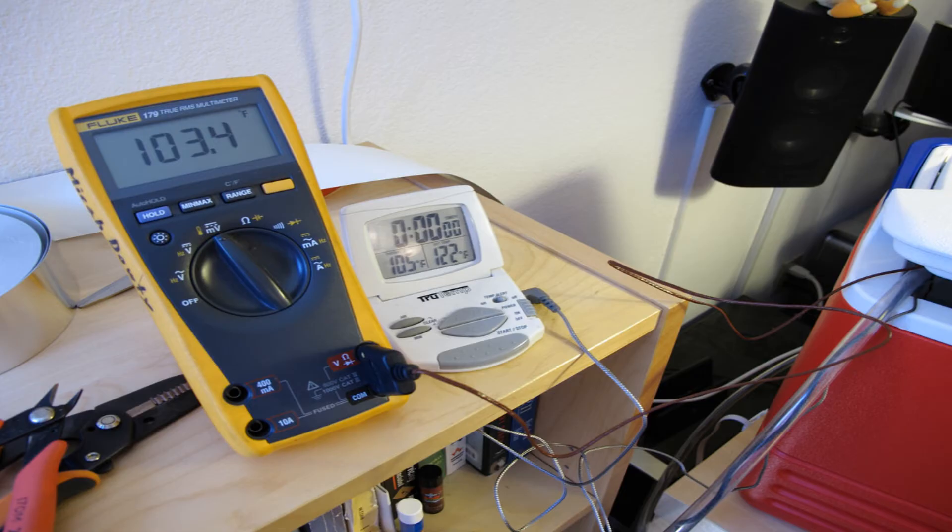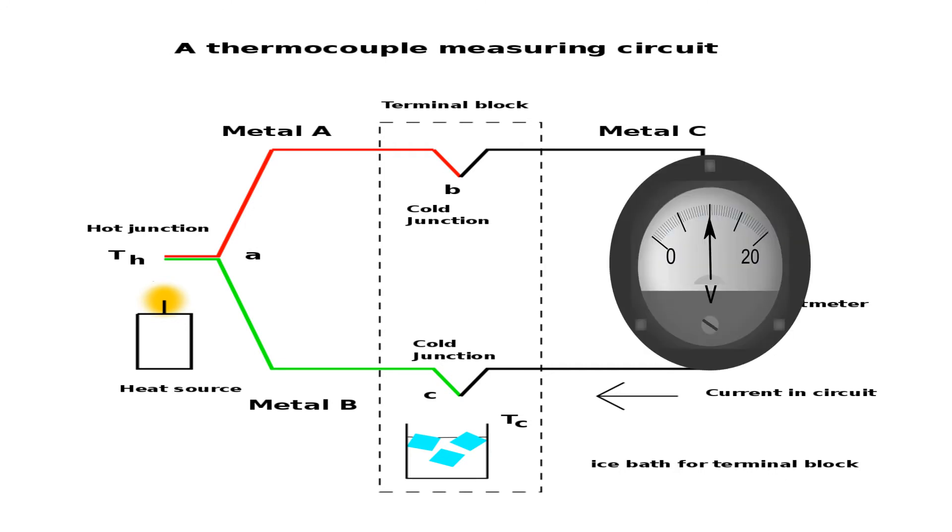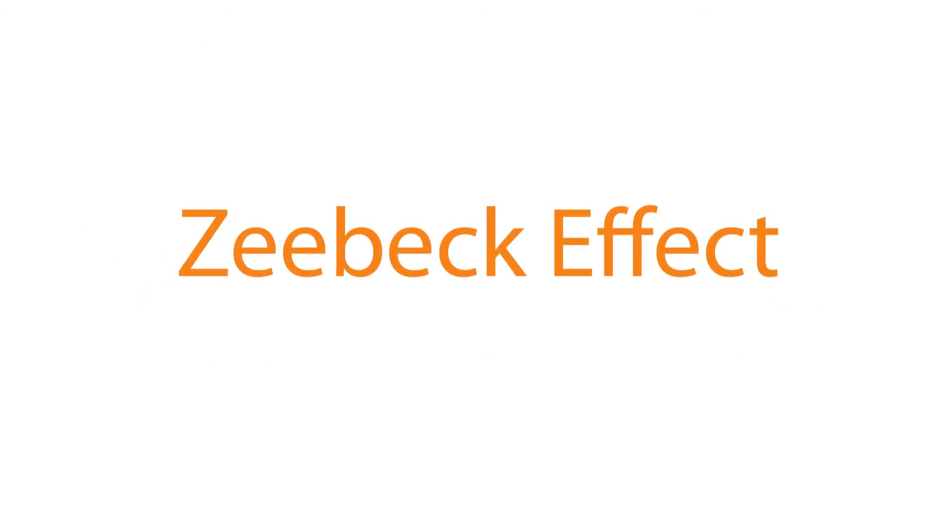When you connect the current with a voltmeter, when the voltage is connected to the circuit, we calculate the voltage and the voltage is connected to the current. This is the Zeebeck effect.